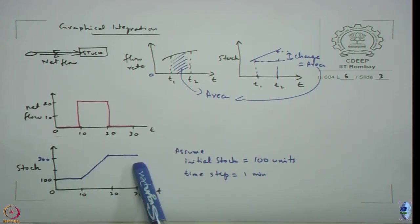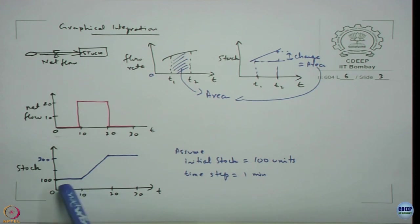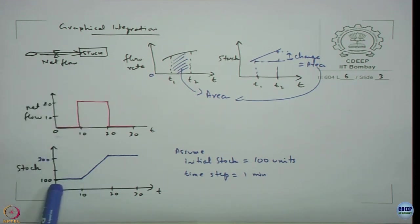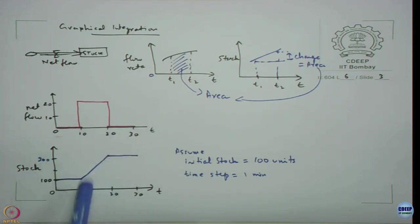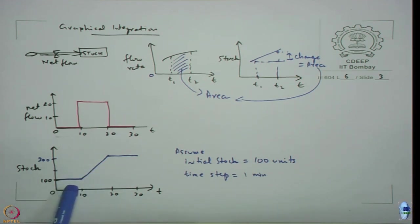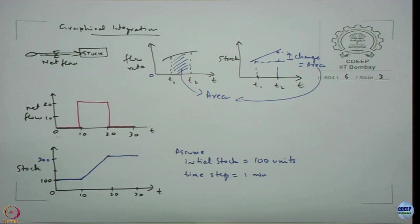The stock has memory of all past events that have occurred — it has accumulated them and stores it in the value of 300. There is also inertia: unless the flow changes, nothing influences the stock. The stock continues to remain the same; it does not leave or increase automatically. This is what we refer to as inertia and memory, as mentioned in yesterday's lecture.